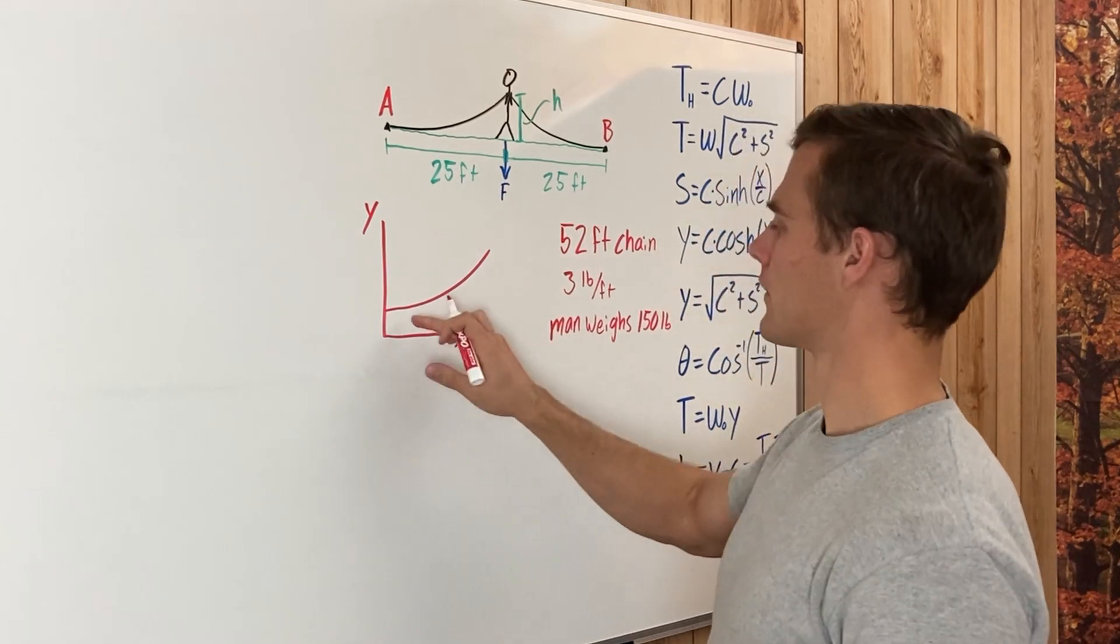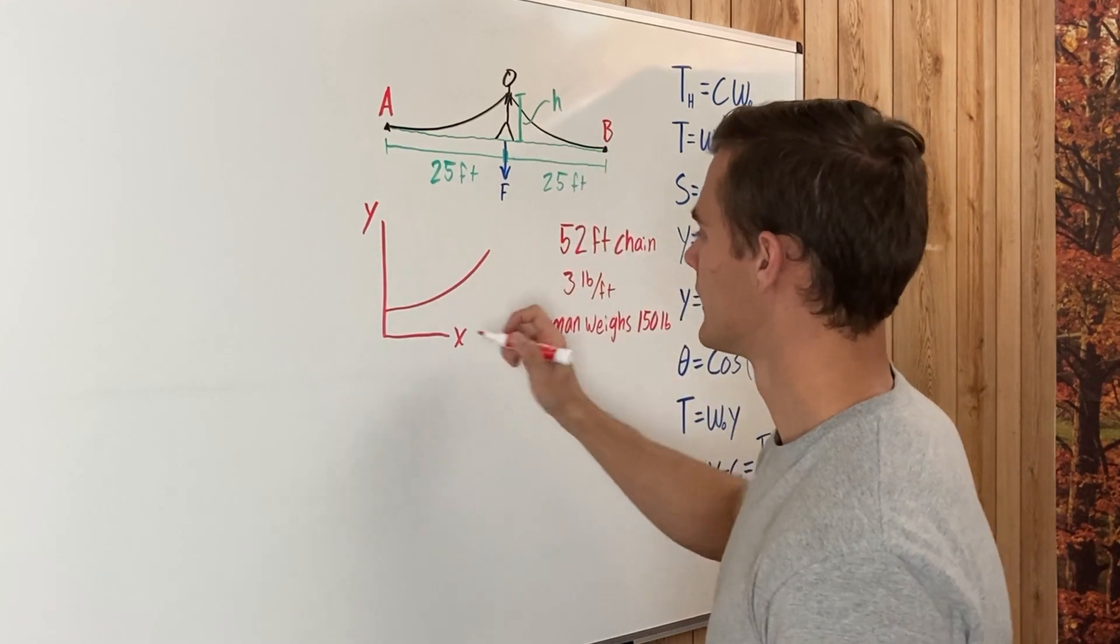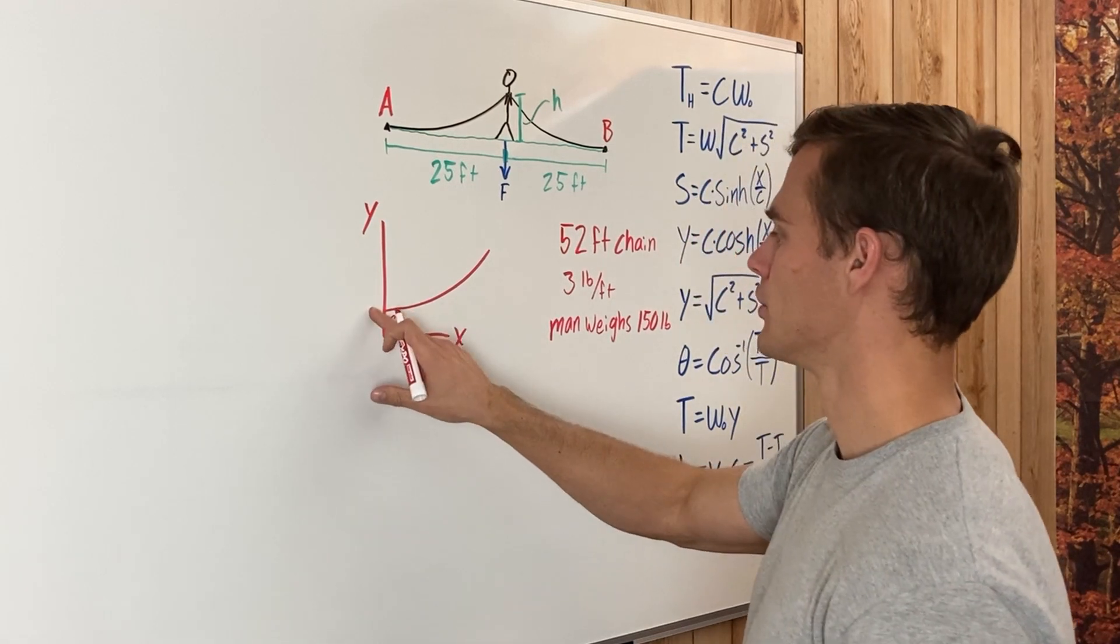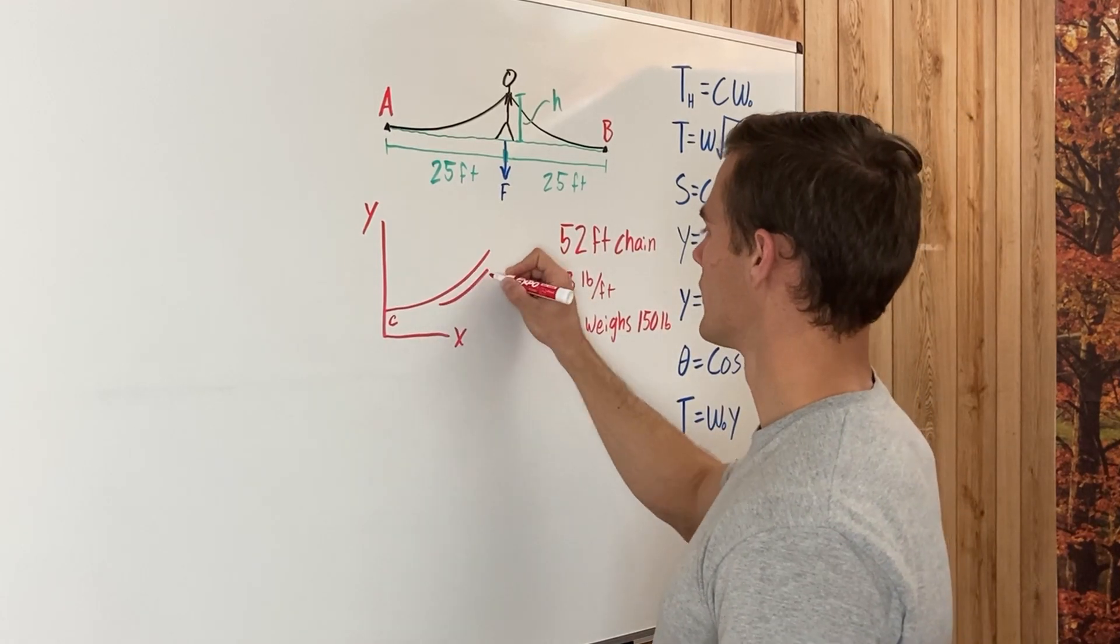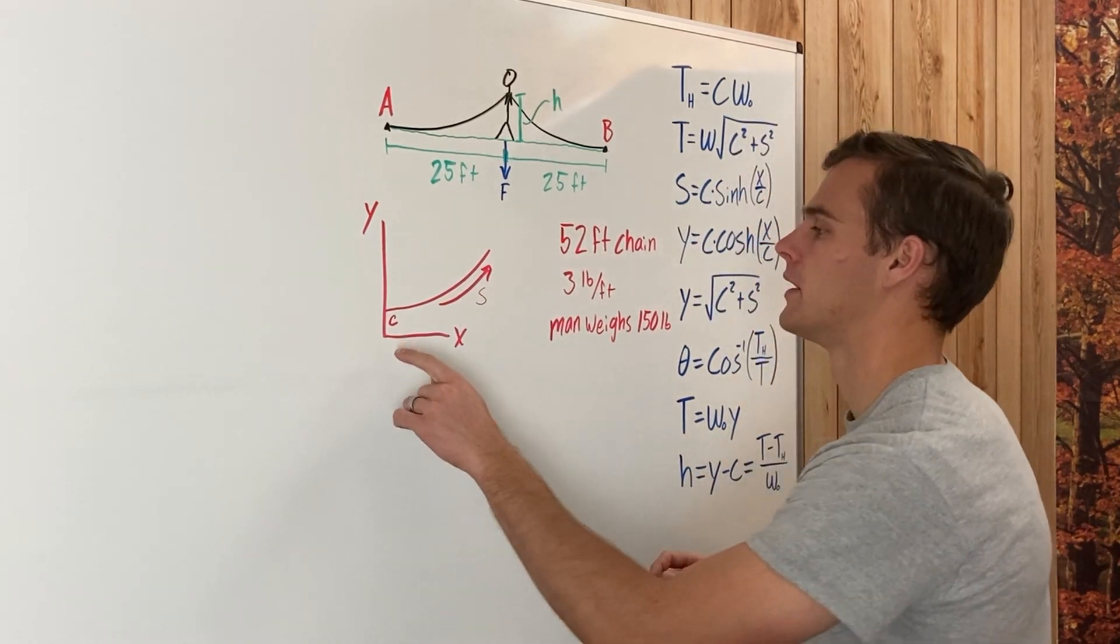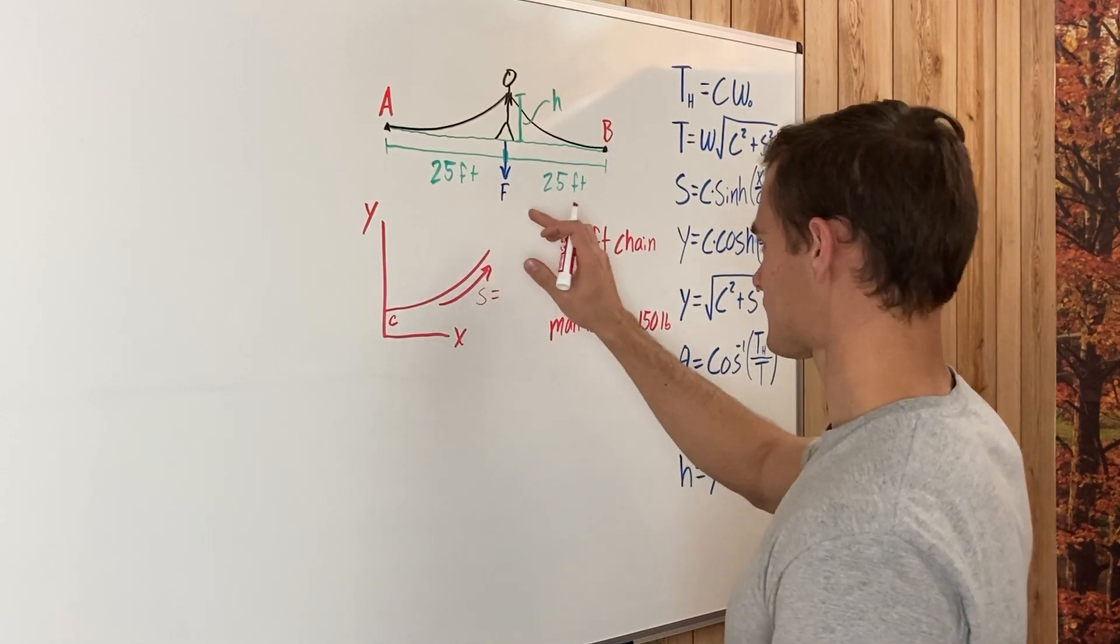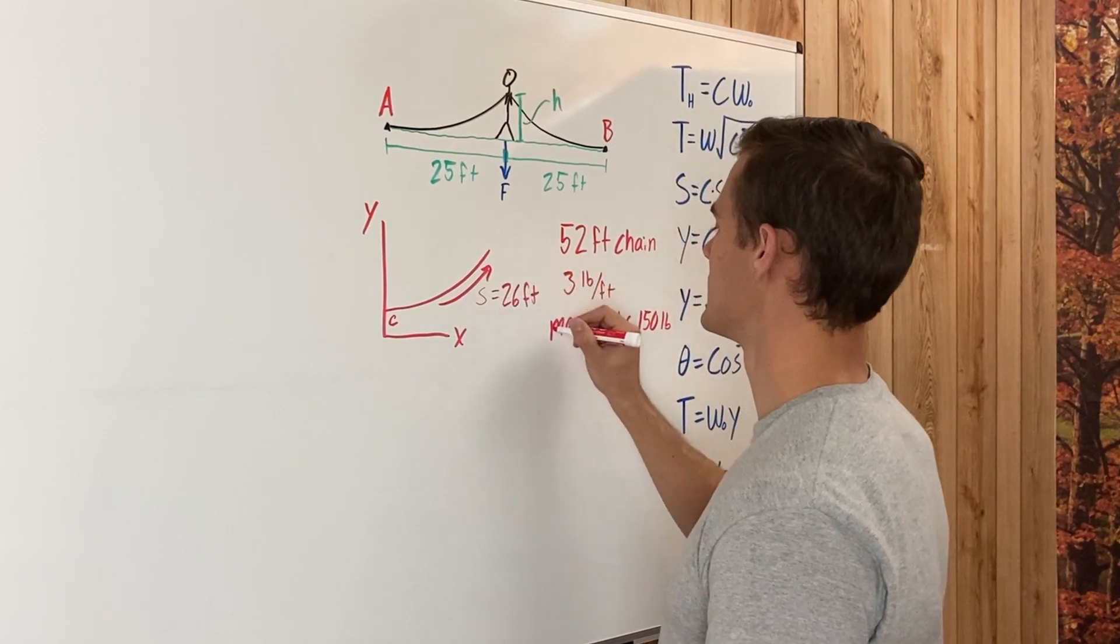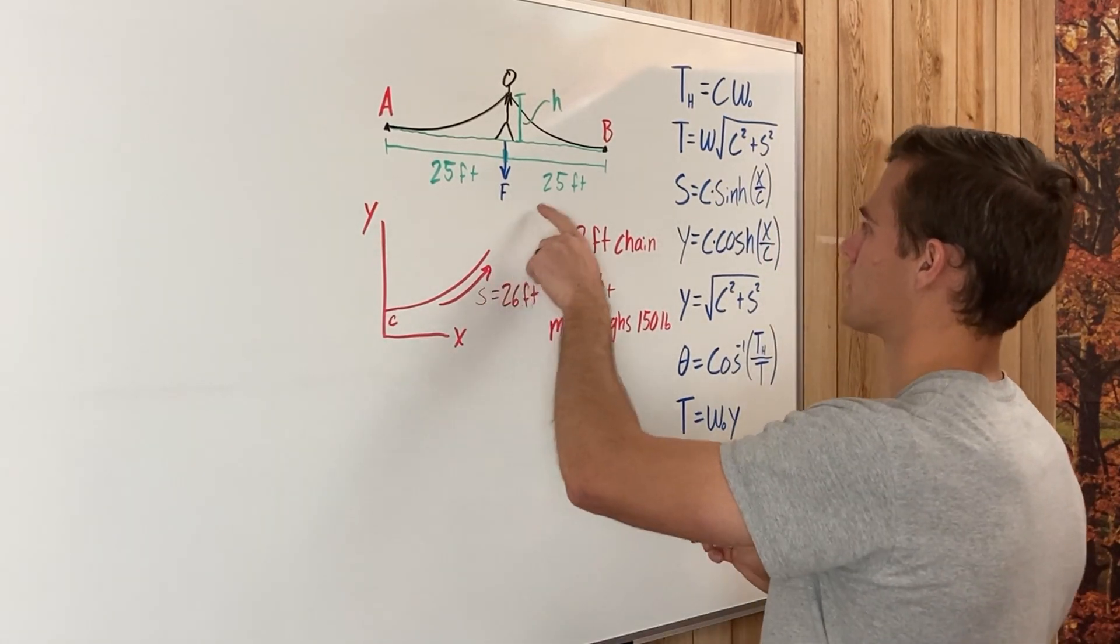We have the length of half of the cable going from A to the man. We have our distance C from the x-axis to the cable at the lowest point A, and then we have our length along our cable which is S. S is going to equal 26 feet, which is half of the chain. So that's 26 feet.